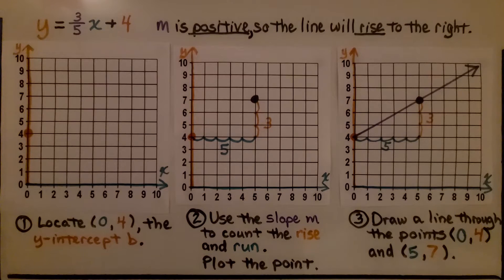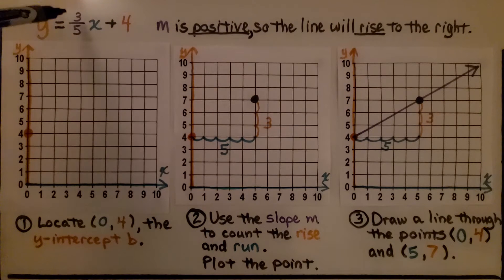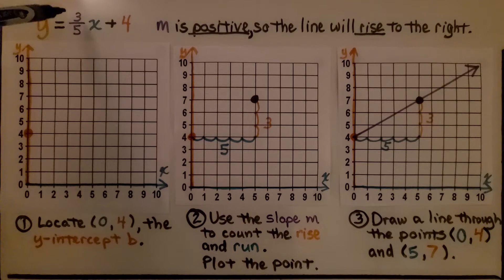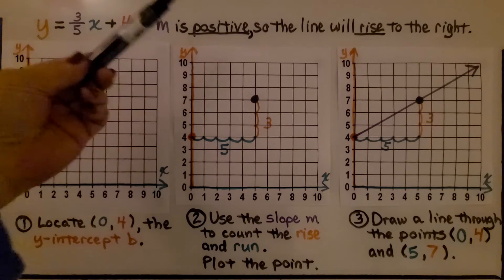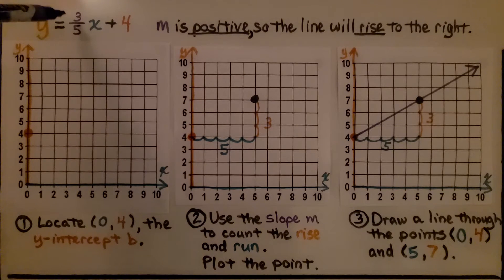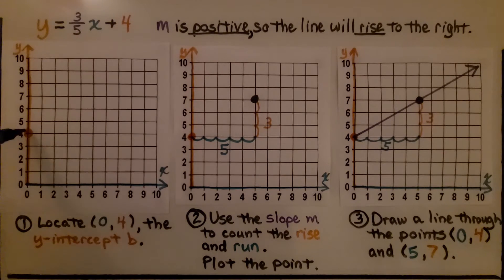Let's walk through another easy one with both positives for the slope and the y-intercept. We can see that the slope is positive, so the line will rise to the right — we know that just by looking at this. First thing we do is locate that y-intercept b, that 4 on the y-axis. It's a positive 4, so it's going to be up here. This is 0 for x, 4 for y.